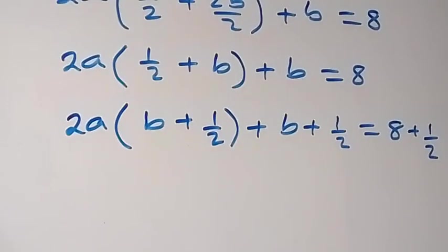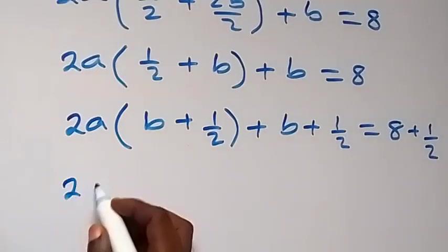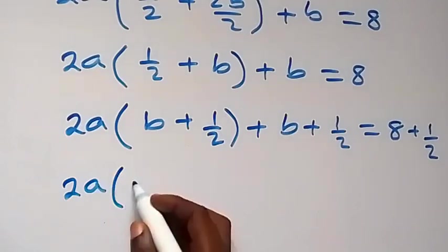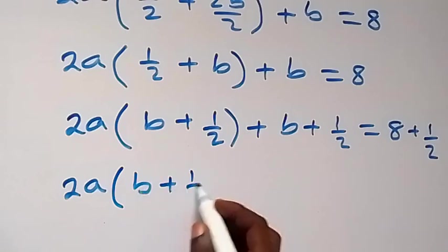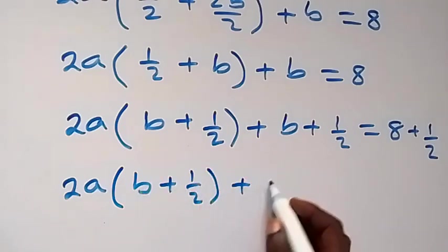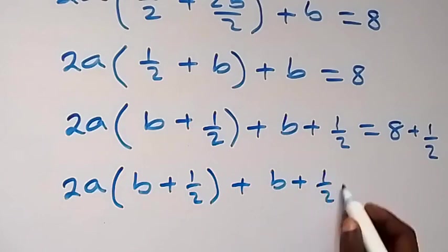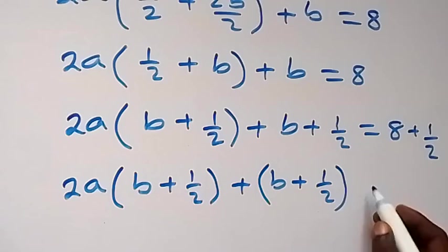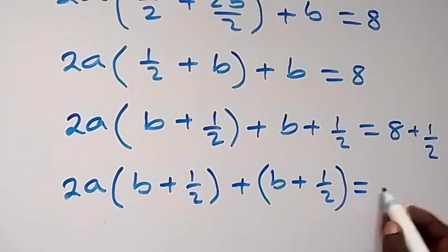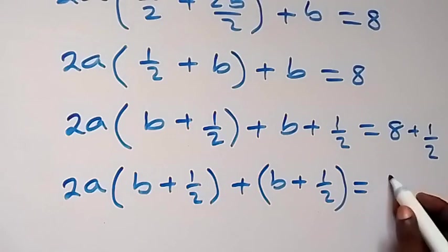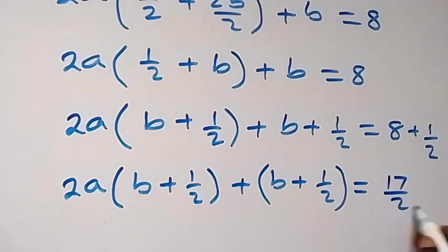Then what we have here — this now becomes 2a into bracket b plus ½, then plus b plus ½. You can put this as well in bracket, then it equals to 8 and something over 2.